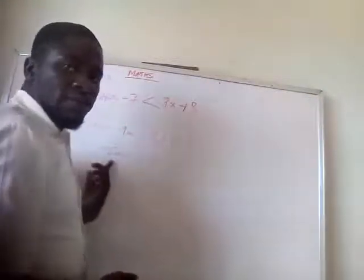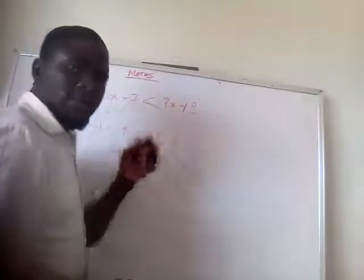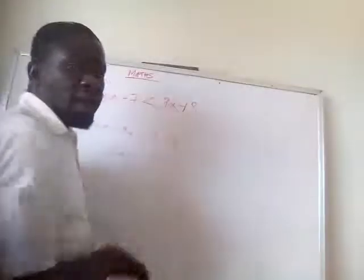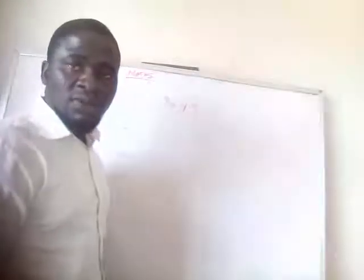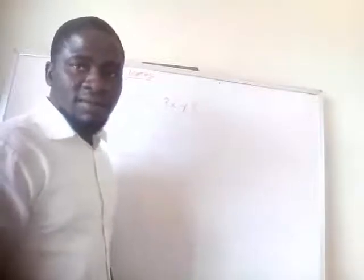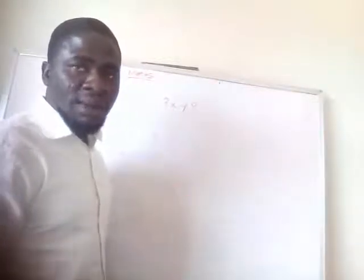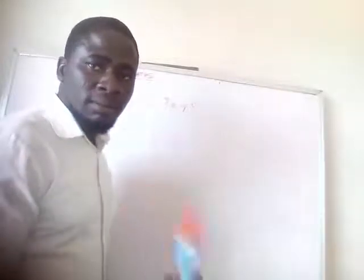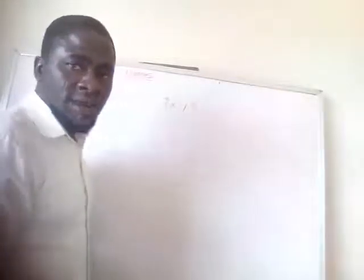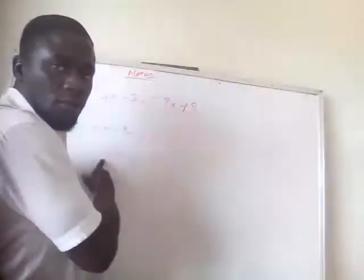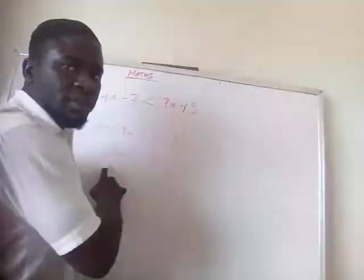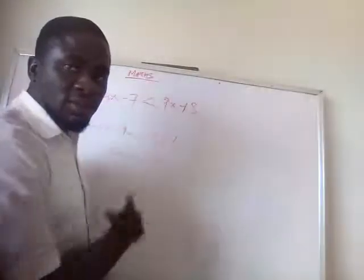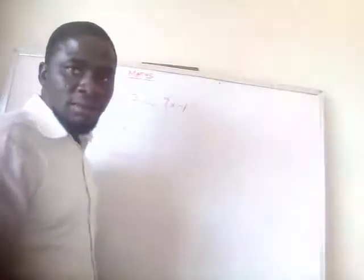So we have minus 5x is less than 15. Now we want to find x — we are not looking for minus 5x. So that's where you apply the law: you divide both sides by minus 5. Since it has minus here, to remove this minus you divide by minus 5 on both sides.